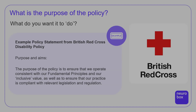The purpose of your policy — what do you want it to effectively do? Here's an example from the British Red Cross disability policy. They set out the purpose and aims: 'The purpose of the policy is to ensure that we operate consistent with our fundamental principles and our inclusive value, as well as to ensure that our practice is compliant with relevant legislation and regulation.' So here we have two sides of the why: the social justice and inclusion piece, and the compliance and legal side.